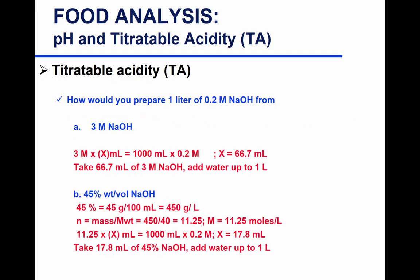For the first problem, applying M₁V₁ = M₂V₂ gives you the milliliters. Remember to state what you do with those milliliters: take that volume from the 3 molar NaOH and make up to 1 liter in a volumetric flask. For the second problem, you convert to grams per liter, apply number of moles equals mass over molecular weight, and the molarity is moles per liter. You take 17.8 mL from the 45% NaOH and make up to 1 liter.